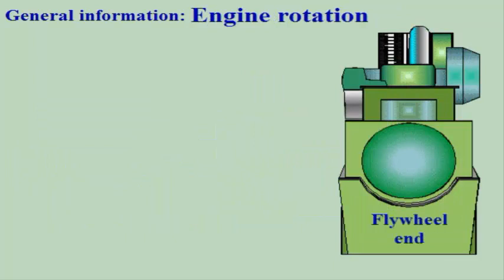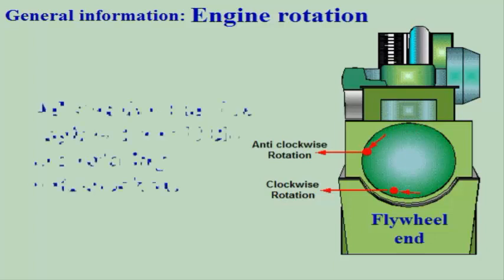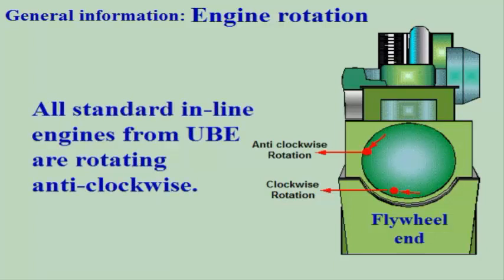The direction of rotation of Ullstein Bergen engines is defined as seen from the flywheel end. All standard inline engines from Ullstein Bergen are rotating anti-clockwise.